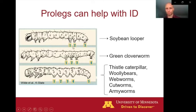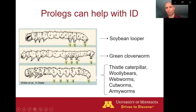For caterpillars, if you find them and they have a total of three pairs of prolegs — the abdominal prolegs and the anal prolegs combined — that would be the soybean looper or one of the other loopers in soybean. If you count four pairs total of prolegs — three pairs of abdominal prolegs and a pair of anal prolegs — that would give you the green clover worm. That's really the only species in soybean that's going to have four total pairs of prolegs. And then more commonly across the different species in soybean, you're going to see a total of five pairs of prolegs — things like the thistle caterpillar, woolly bears, some of the webworms, cutworms or armyworms.